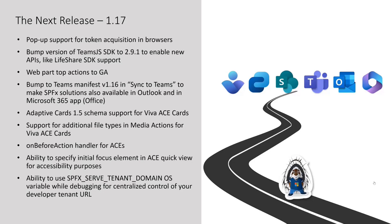We now support pop-up flow for token acquisition in browsers. We bumped the version of Teams.js SDK to 2.9.1, which is the latest one for Teams.js. Web part top actions now go GA. We also bumped the Teams manifest to 1.16 when you click on Sync to Teams or Add to Teams in the modern experience. After that, your app will be automatically available — if you have personal apps enabled — not only in Teams, but also in the Microsoft 365 app and in Outlook as well.